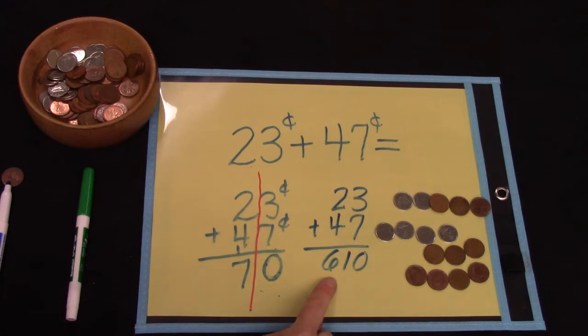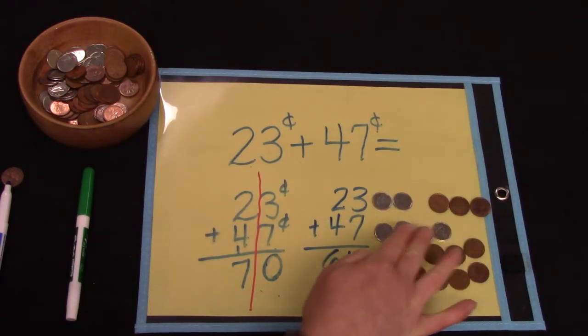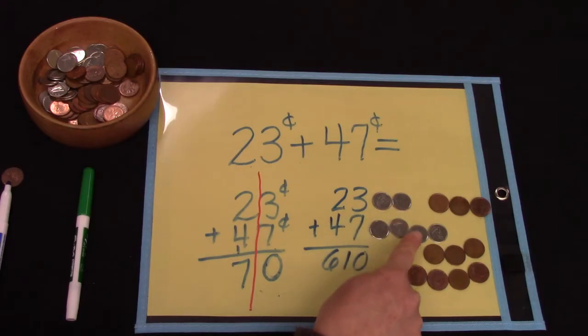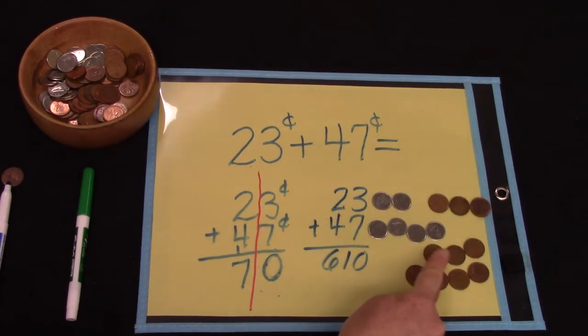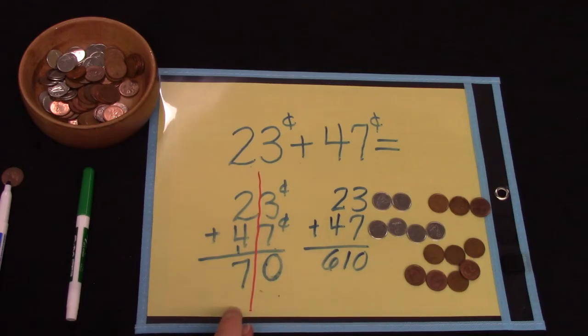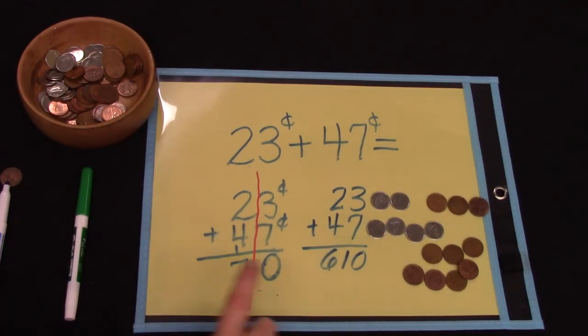Well it certainly does not look like there's 610 cents here does it? Well let's count it. 10, 20, 30, 40, 50, 60, 61, 62, 63, 64, 65, 66, 67, 68, 69, 70. Which one was right? 70 or 610? 70.